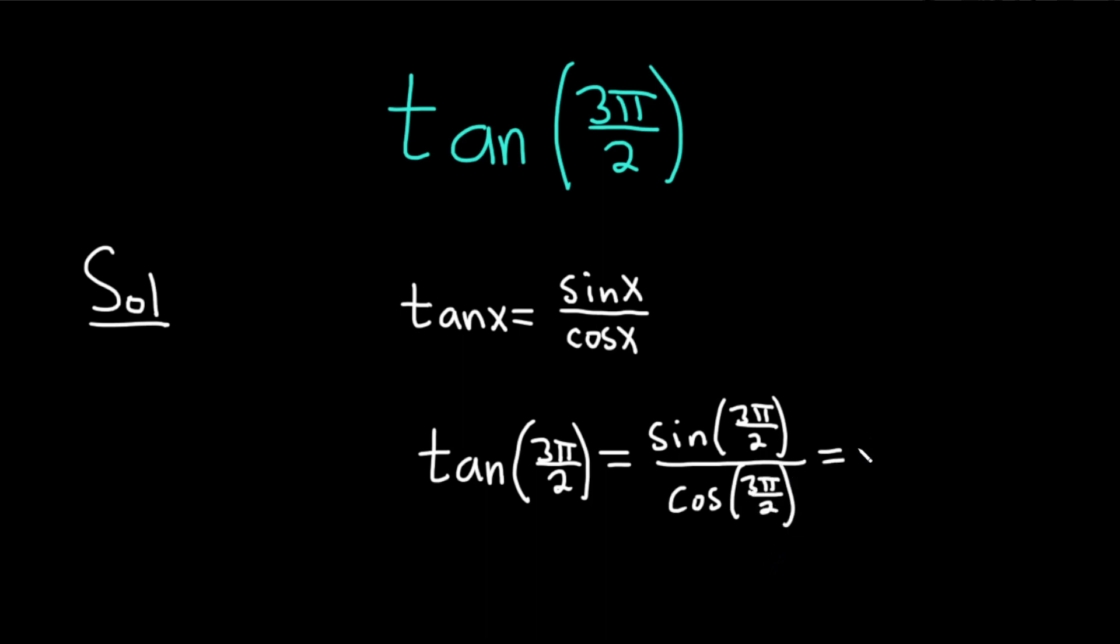And the sine of 3π over 2, that's going to be negative 1. And the cosine of 3π over 2, that's going to be 0.